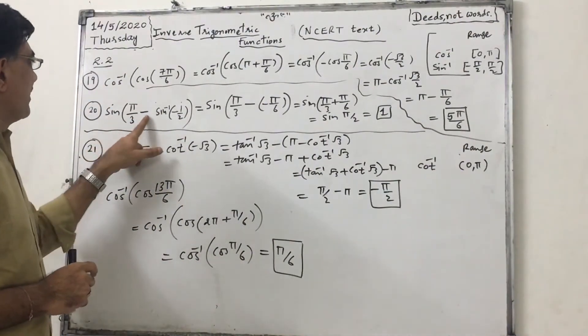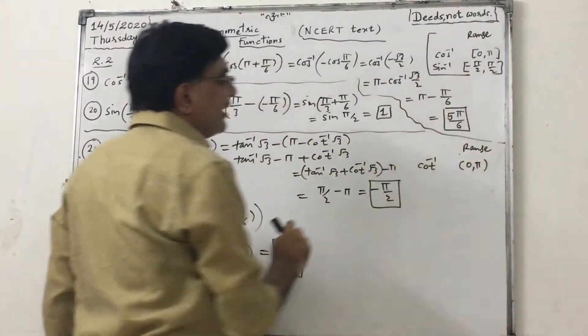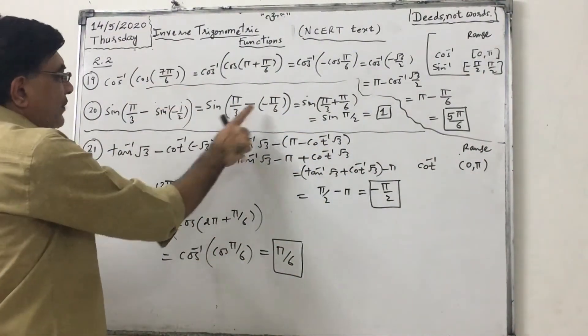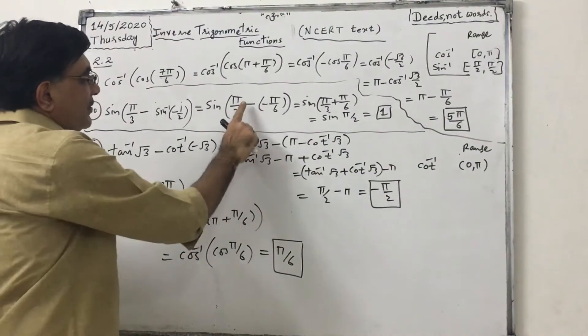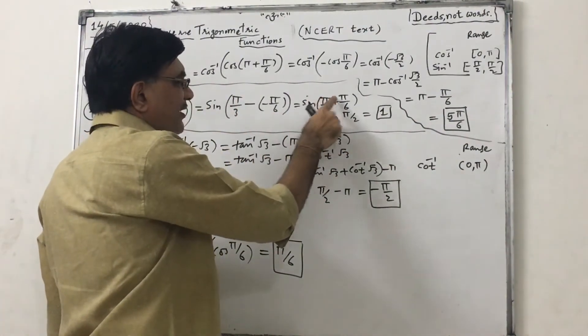Now sin of π by 3 minus sin inverse of minus 1 by 2. Range of sin inverse is minus π by 2 to π by 2. So here, sin inverse of minus 1 by 2 we have to write minus π by 6. So this minus minus will become plus. Now see this is 60 degrees actually, this is 30 degrees.